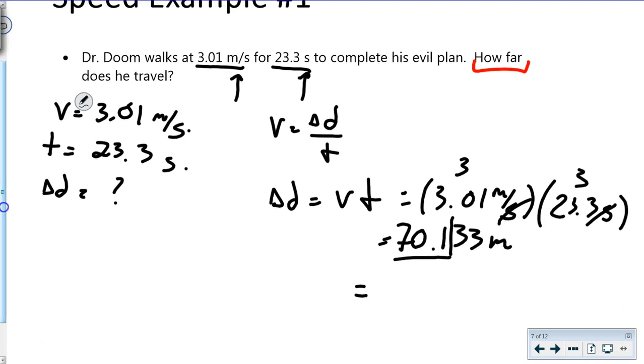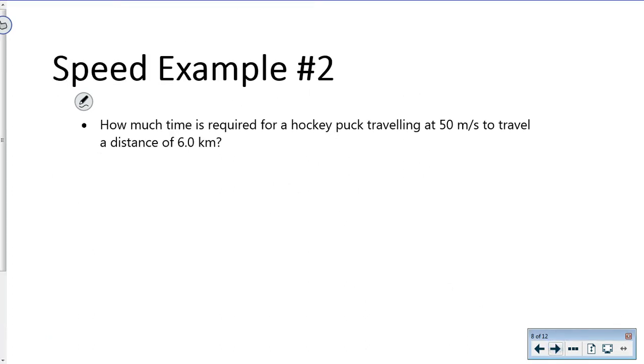If you're ever not sure, look back—whatever units are left over is the unit you have. You can use this to prevent mistakes. Next example: how much time is required for a hockey puck traveling at 50 meters per second to travel a distance of 6.0 kilometers? Time is our unknown, with v equals 50 meters per second and d equals 6.0 kilometers.